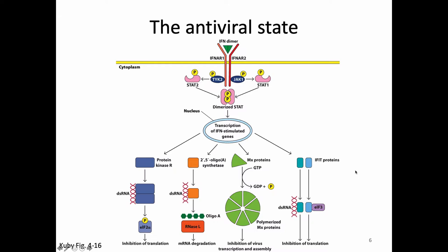Another particularly famous ISG is 2-prime 5-prime oligoadenylate synthetase, usually known as OAS. OAS eventually turns on an RNase which degrades mRNAs. Degrading mRNAs stops viral protein translation, and for viruses with mRNA genomes you're also tearing up the genome itself — making it so they can't do translation or replication.